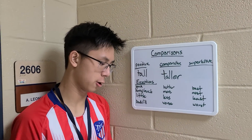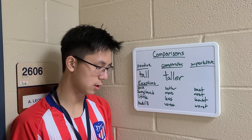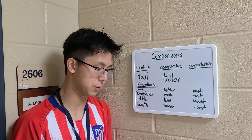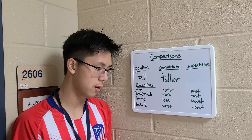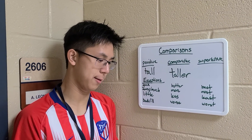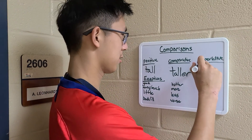Superlative comparisons describe three or more things using -est or most with the words. An example is: out of Sally, Ryan, and James, Ryan is the tallest.